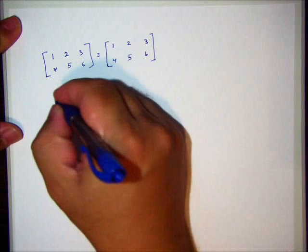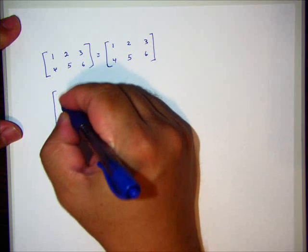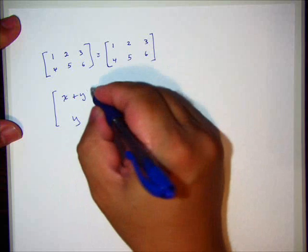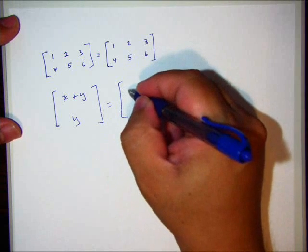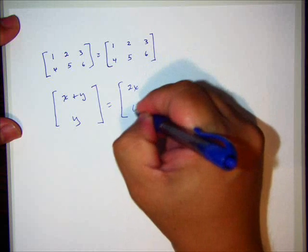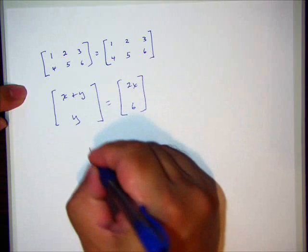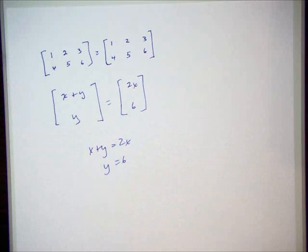Well, what's going to happen is more this. Let's say we have x plus y and let's say we got 2x and 6. So this is how we're going to use it. Because of our definition of equal matrices, we can say from this that x plus y equals 2x and y equals 6.